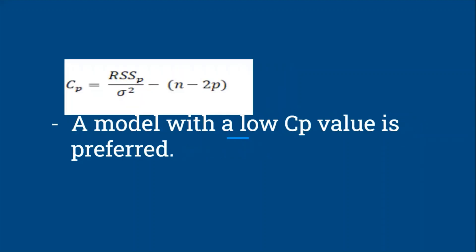Next is the CP criteria. The formula is RSS_p divided by sigma square minus n minus 2p. In case of CP criteria, a model with low CP value is chosen.